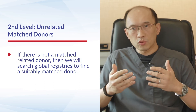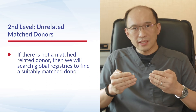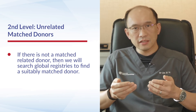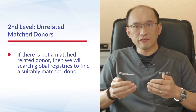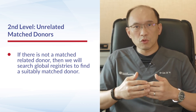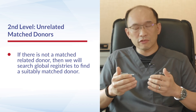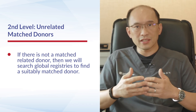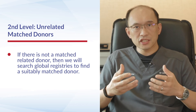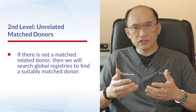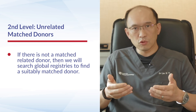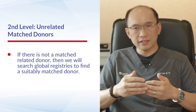If a patient doesn't have any matched siblings, we look at other alternatives. This includes unrelated matched donors. There are global registries where donors from Singapore and around the world are registered, and using the patient's HLA type we can search the registry to find a suitably matched donor, either locally in Singapore or internationally.